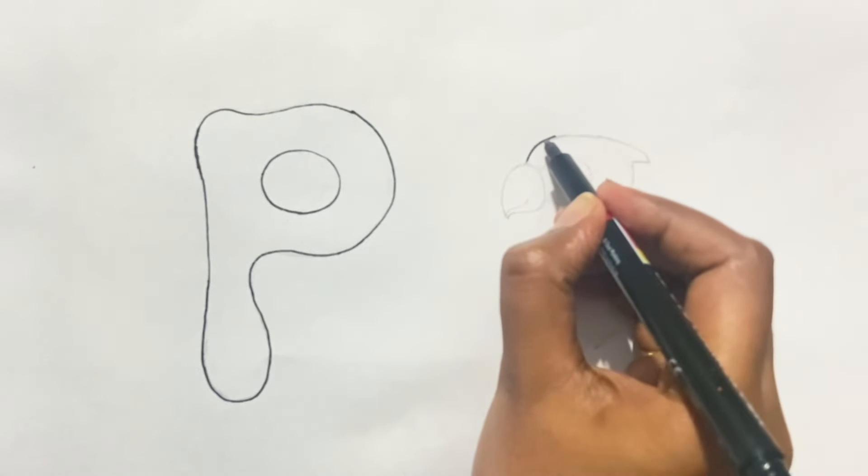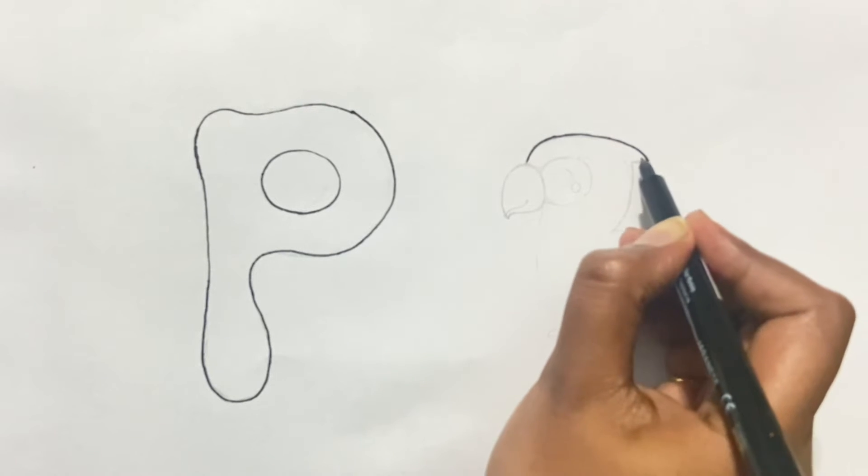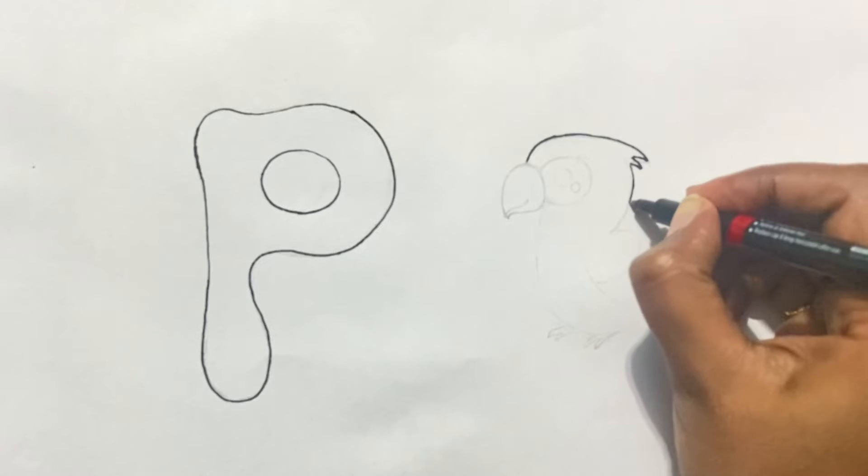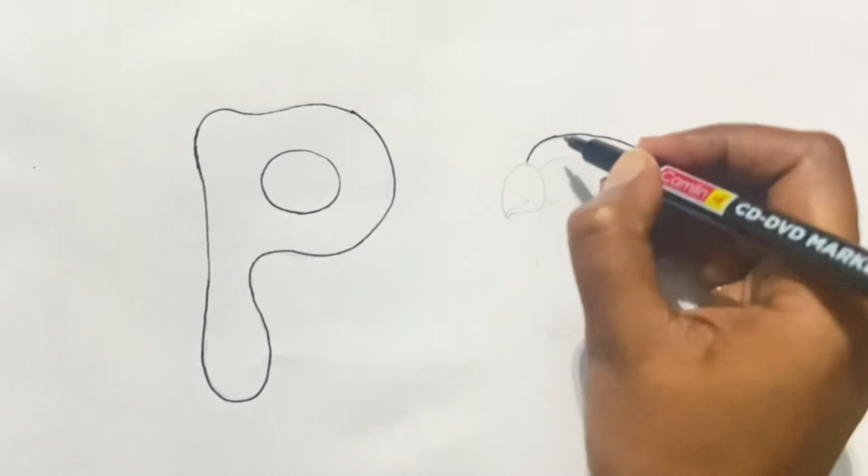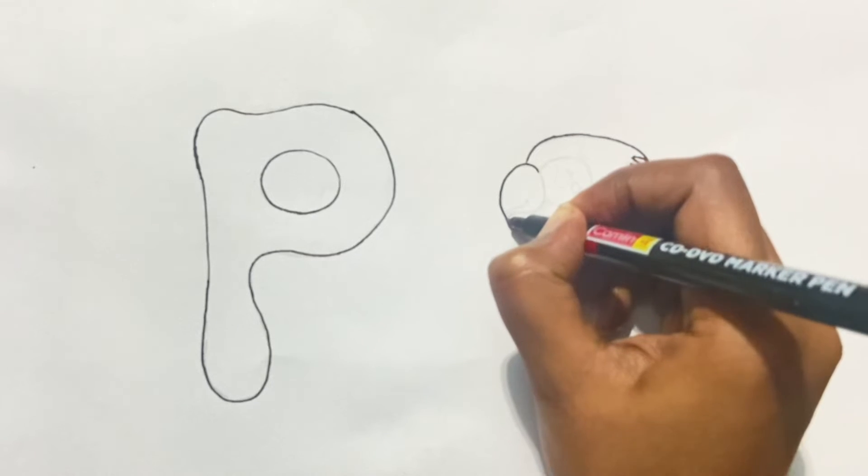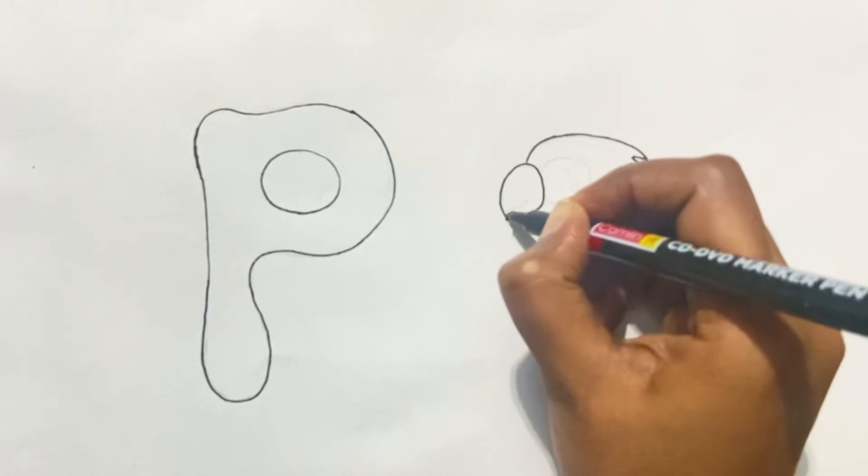Now we will start drawing the parrot. Make a shape like this with me. Now start making the beak, a pointed beak just like a mango.